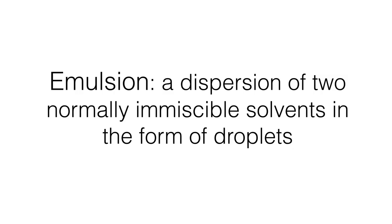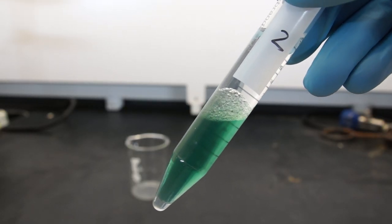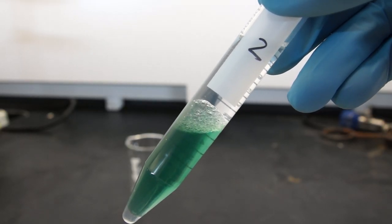Sometimes during extraction, you might get what's called an emulsion—a dispersion of two normally immiscible solvents in the form of droplets. If you have an emulsion like we have here, you want to try and clear it up.